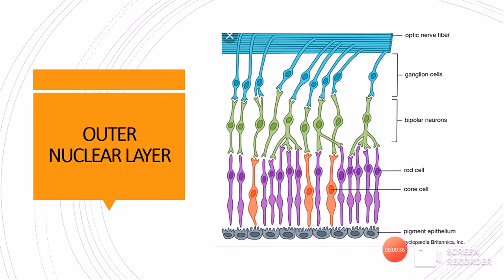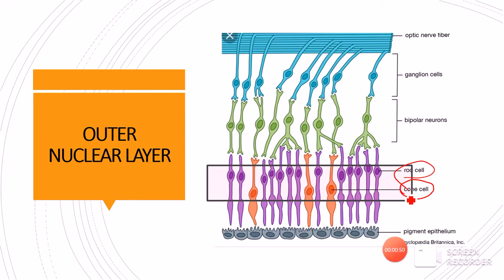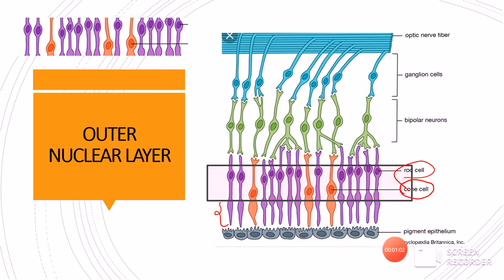Next we have the outer nuclear layer, which consists of the nuclei of the rods and the nuclei of the cones. The segments are present in the layer of rods and cones, while the nuclei of the rods and cones are present in the outer nuclear layer.